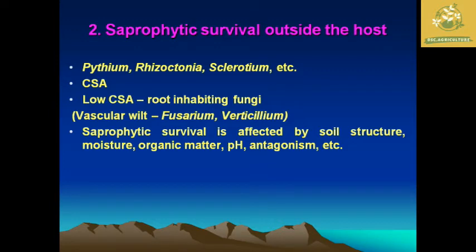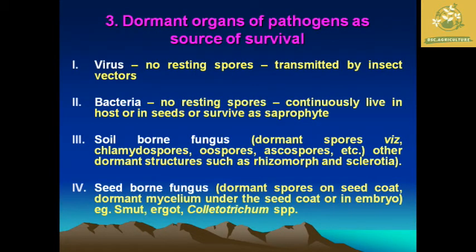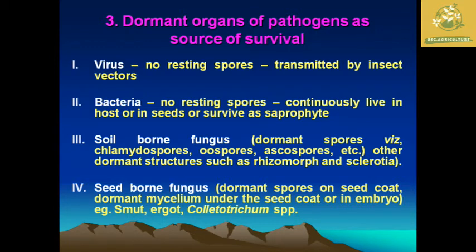The third category is dormant organs of pathogens. For viruses, there are no resting spores — they are transmitted by vectors and live inside insects. Bacteria also have no resting spores; they continue living in the host and survive as saprophytes from field remains, in seeds, and in soil. Soil-borne fungi are spore-forming fungi — examples include chlamydospores, oospores, and ascospores.